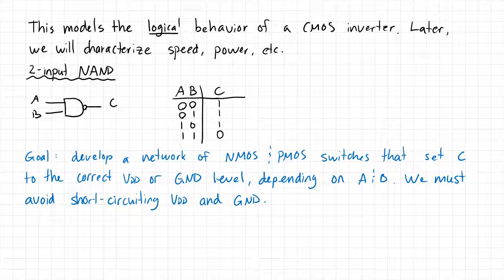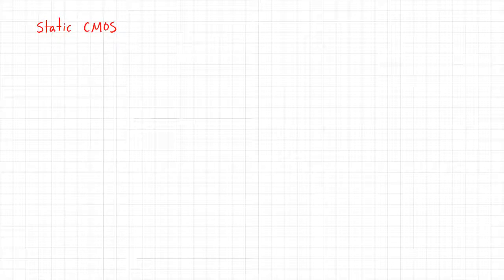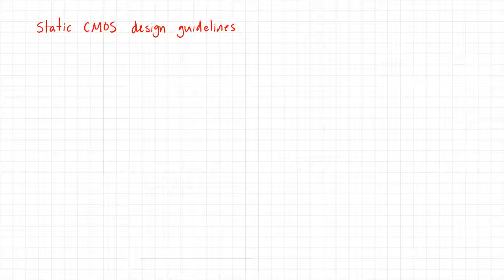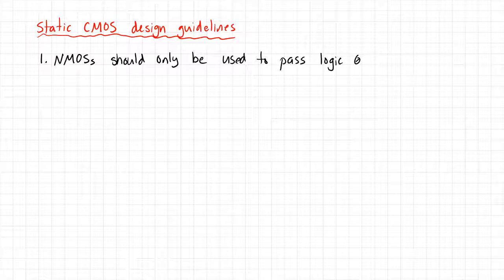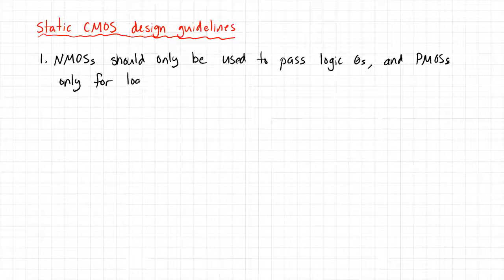I'm going to introduce some design guidelines to help us through logic synthesis — these are static CMOS design guidelines. Step number one: NMOSs should only be used to pass logic zeros, and PMOSs only for logic ones.